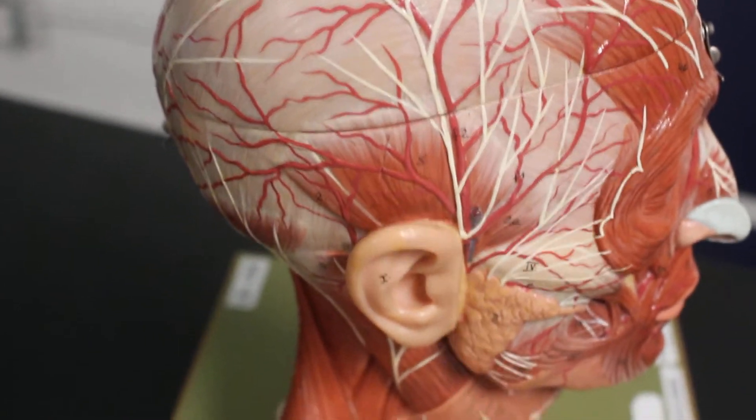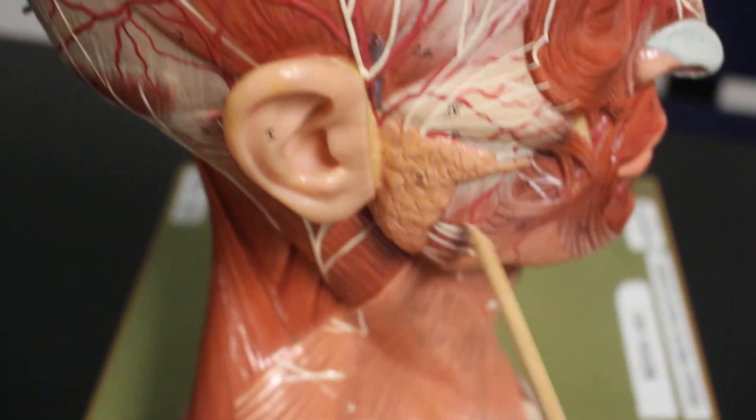Then we have temporalis. Here's temporalis right above the ear. Down here is masseter.